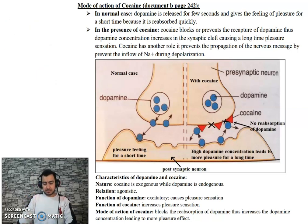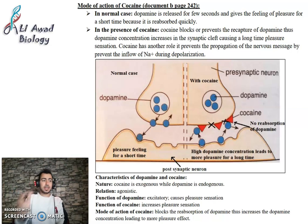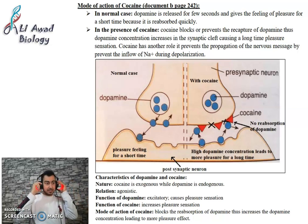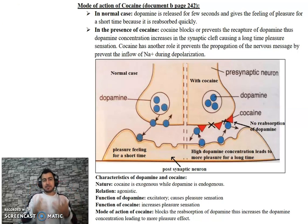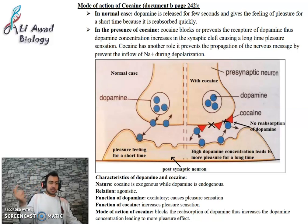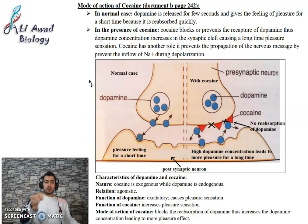The main function of cocaine is to cause pleasure sensation. Dopamine is a type of neurotransmitter found inside your brain, and its main function is to cause pleasure sensation. For example, right now, sitting here — this is due to nervous messages inside your brain leading to the secretion of dopamine.